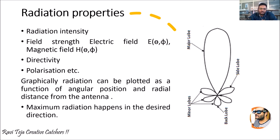Whatever radiation comes out through the antenna can be plotted as a formula or as angular position and radial distance from the antenna. The radiation propagating through the antenna is represented with respect to angle and also radius — how far it is distributed from the antenna. Maximum radiation happens in the desired direction; if you want to transmit a signal in a particular direction, the antenna is said to be radiating in that desired direction.